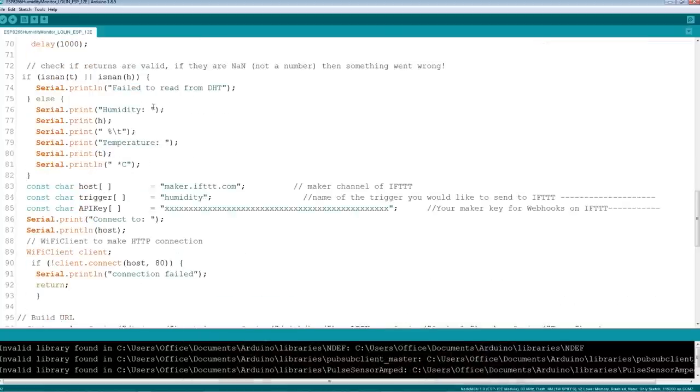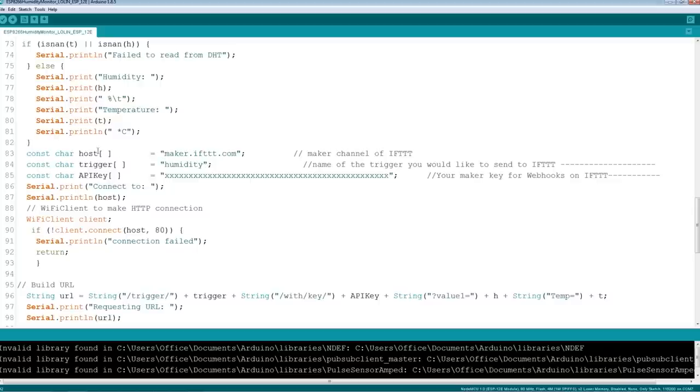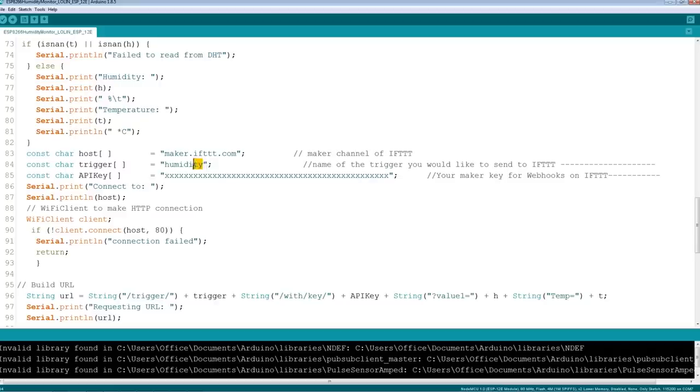Then we do the serial print lines so we can do more debugging. This is where you have to put in some information. So maker.ifttt.com - this is all in the README, this is the same as my motion sensor tutorial which is handy. I go through all of how to set up your IFTTT, but we're naming it humidity, so that's what you're going to set your trigger to in IFTTT.